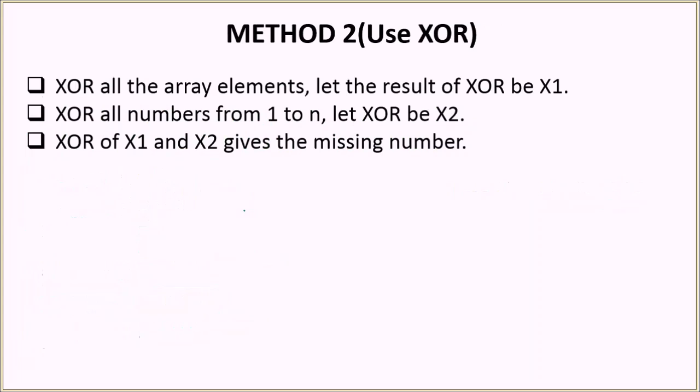Let's look at the second solution. This method will be using XOR. What this algorithm says is XOR all the array elements and let the result of XOR be X1. Then XOR all numbers from 1 to n, all natural numbers till n and let XOR be X2. Then we basically XOR X1 and X2 and the result of XORing X1 and X2 should give us the missing number.